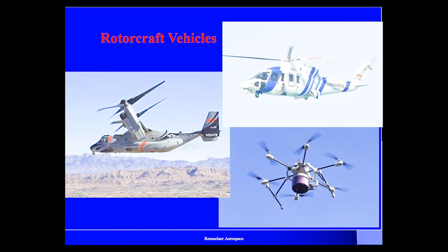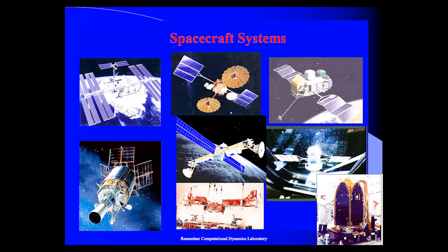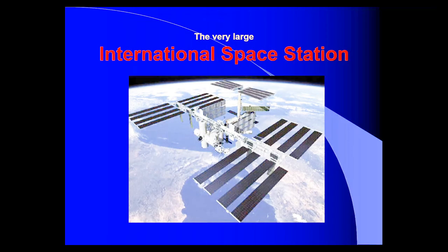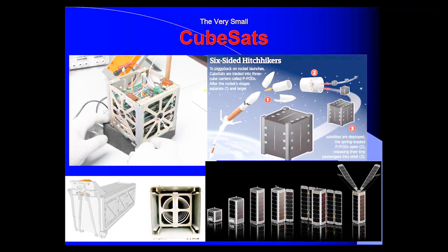Finally, in aerospace, the focus can be on rockets such as the SpaceX Falcon 9 or the Atlas V shown here, or less traditional designs such as those being pursued by stratolaunch. Or we may be talking about spacecraft systems in all of their forms, which can range from the very, very large — such as the International Space Station or the James Webb Space Telescope, which is coming out of the same group I used to work with at Northrop — to the very, very small, such as CubeSats, and everything in between.